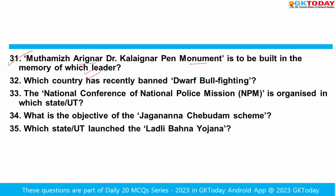Dr. Kalaignar Pen Monument — in whose memory is it to be built? The 12th member expert appraisal committee of the Union Ministry of Environment, Forest and Climate Change, in their meeting, approved a proposal to set up the Dr. Kalaignar Pen Monument in the Bay of Bengal. The monument will be 30 meters high, built across 8,551 square meters, in memory of late DMK patriarch M. Karunanidhi.